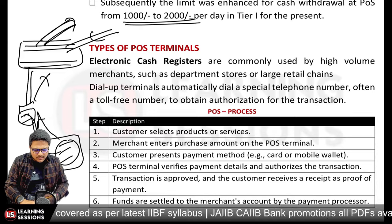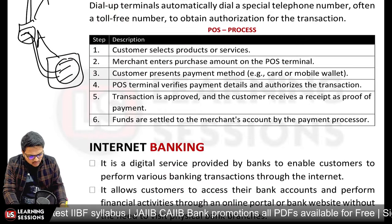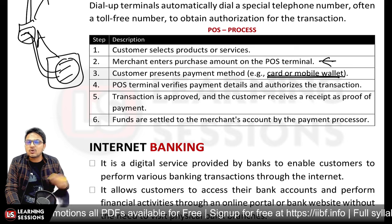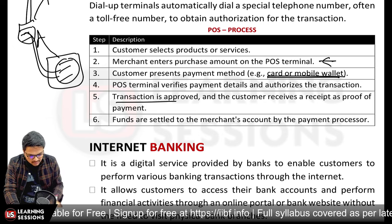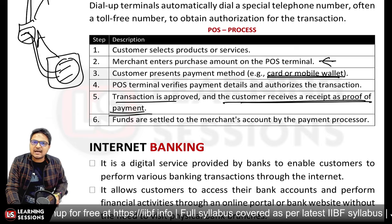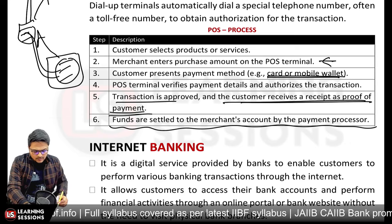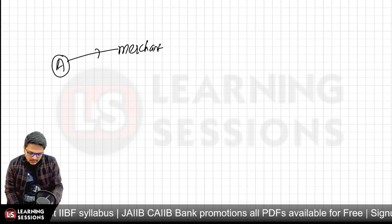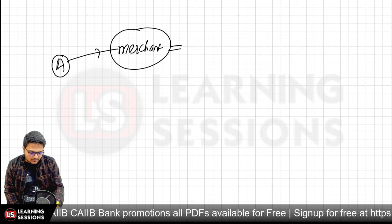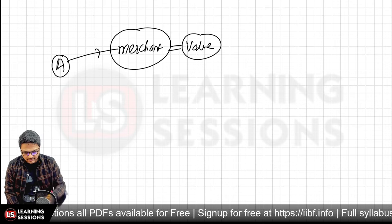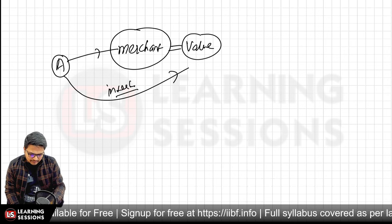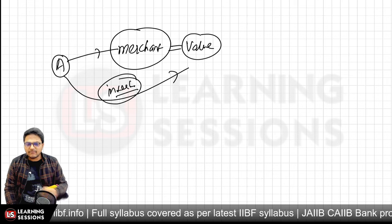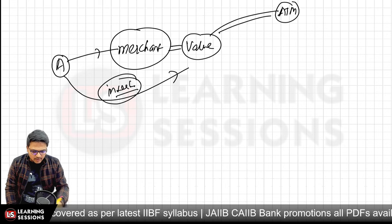The POS process: The customer selects products or services, the merchant enters the purchase amount on the POS terminal, and the customer presents payment — card or mobile wallet; QR code is also allowed. The POS terminal verifies payment details and authorizes the transaction. The customer receives a receipt as proof. Now, let's understand in detail: Customer A visits a merchant, the merchant enters the cost. The customer inserts the card (more secure using EMV technology rather than swiping).